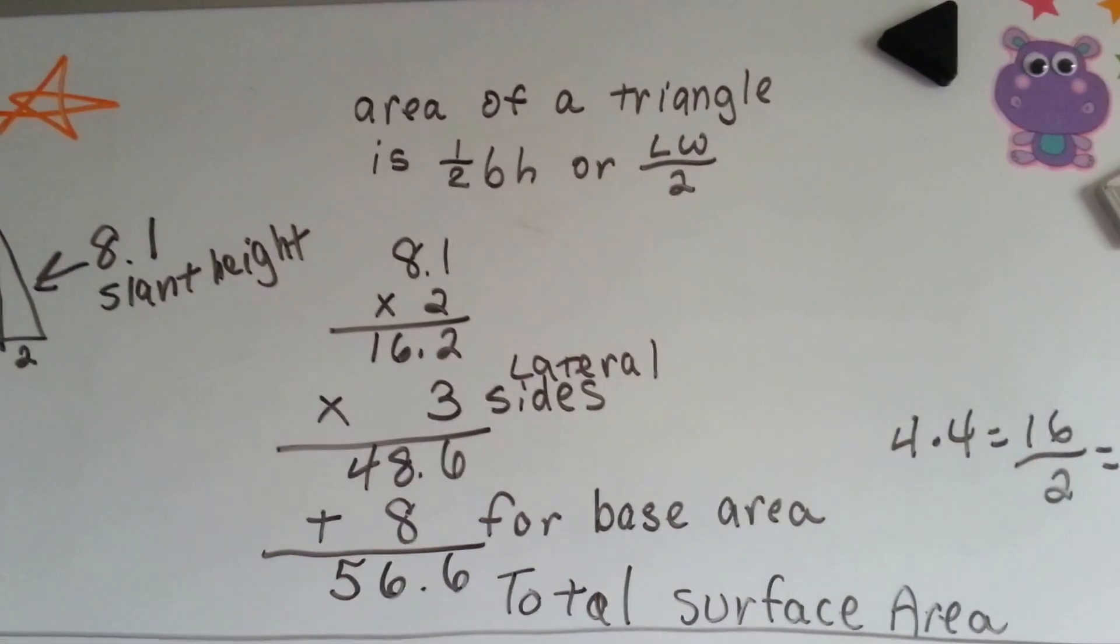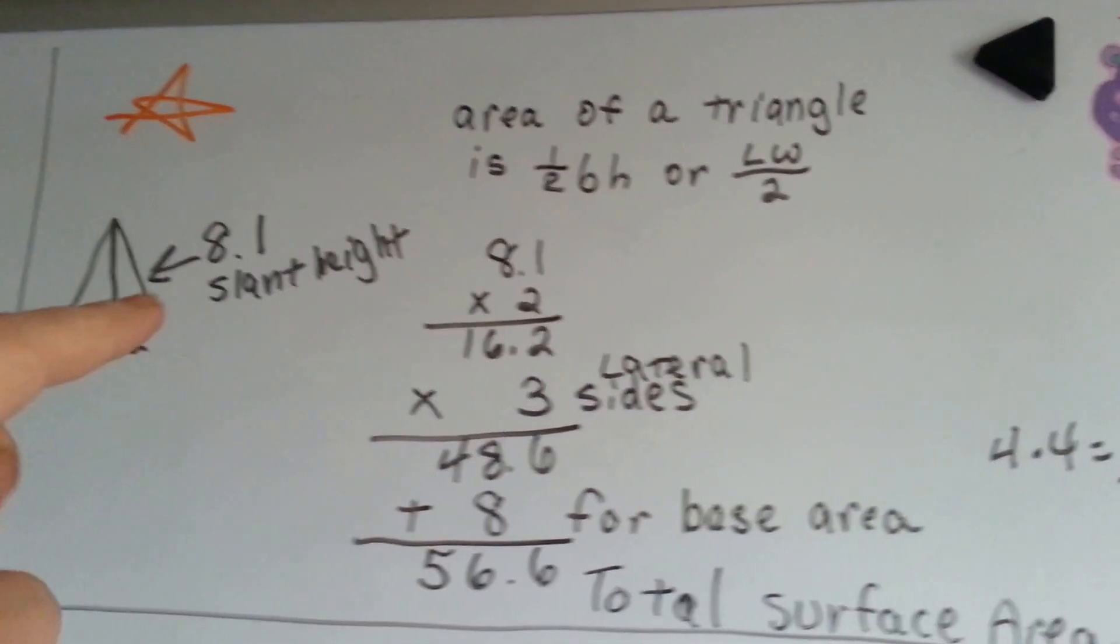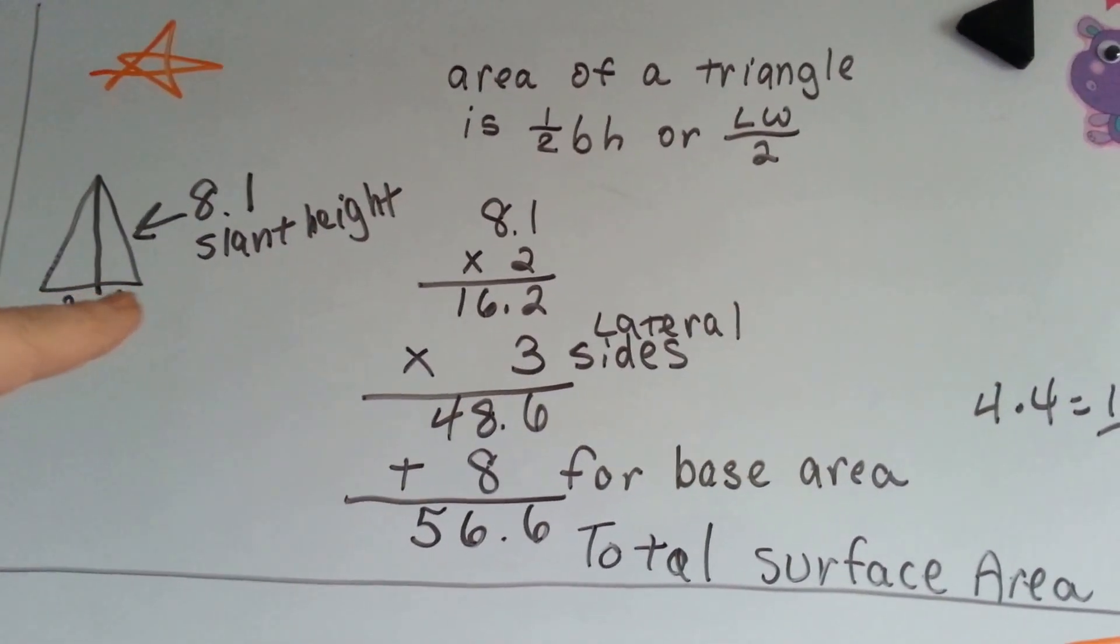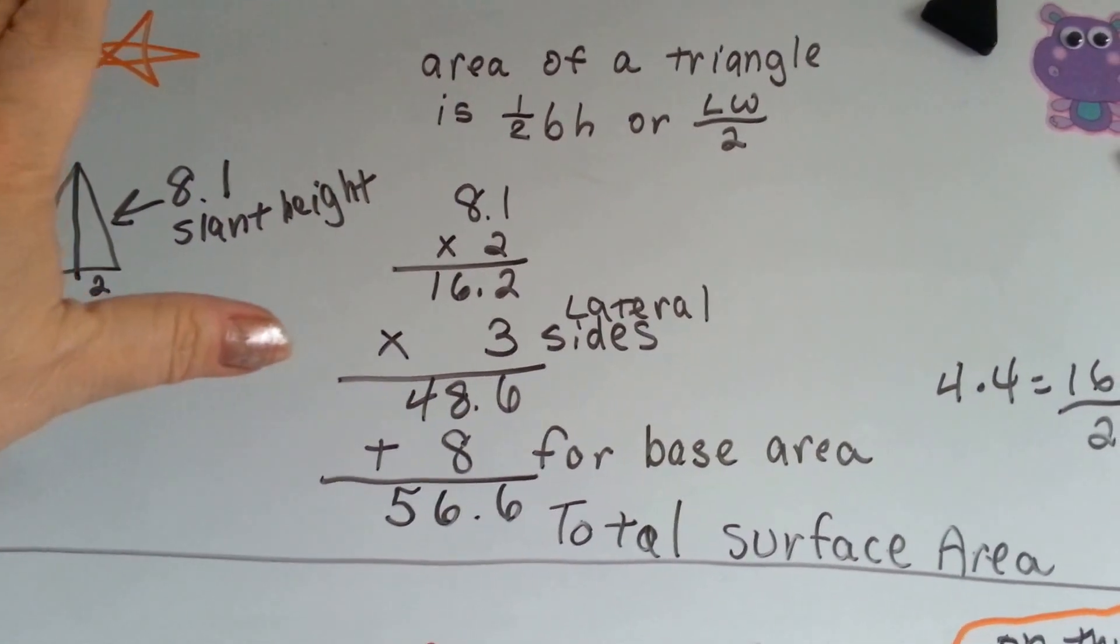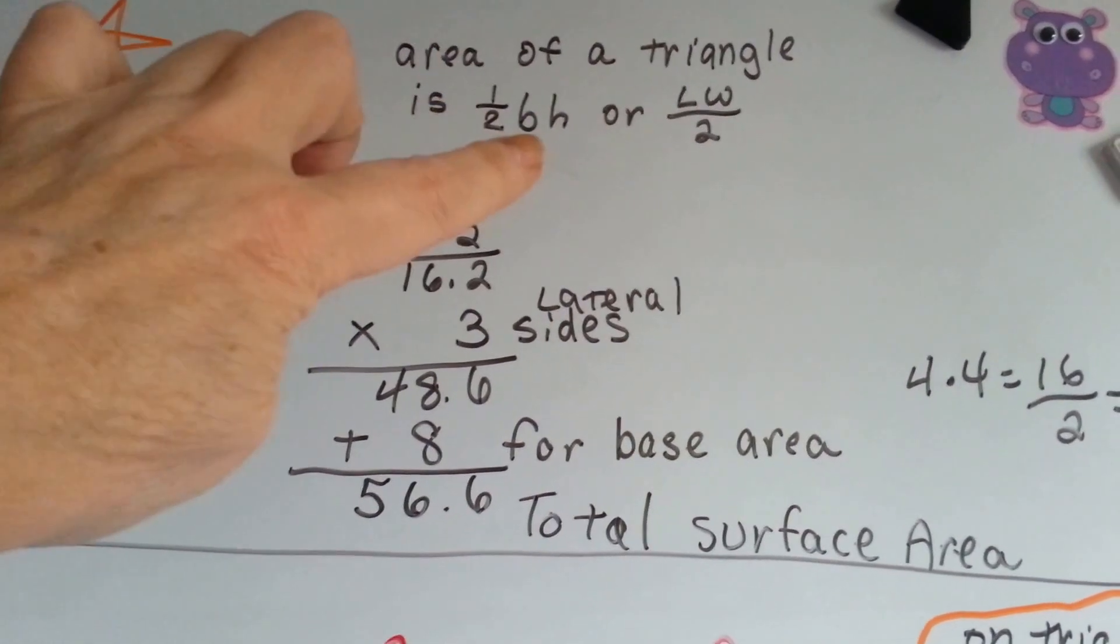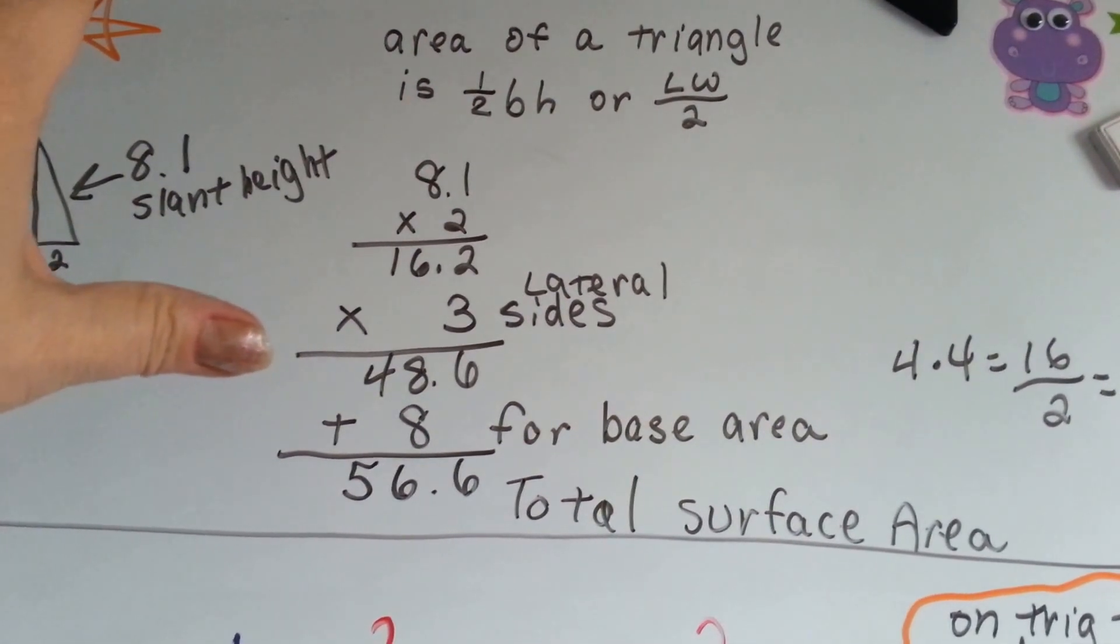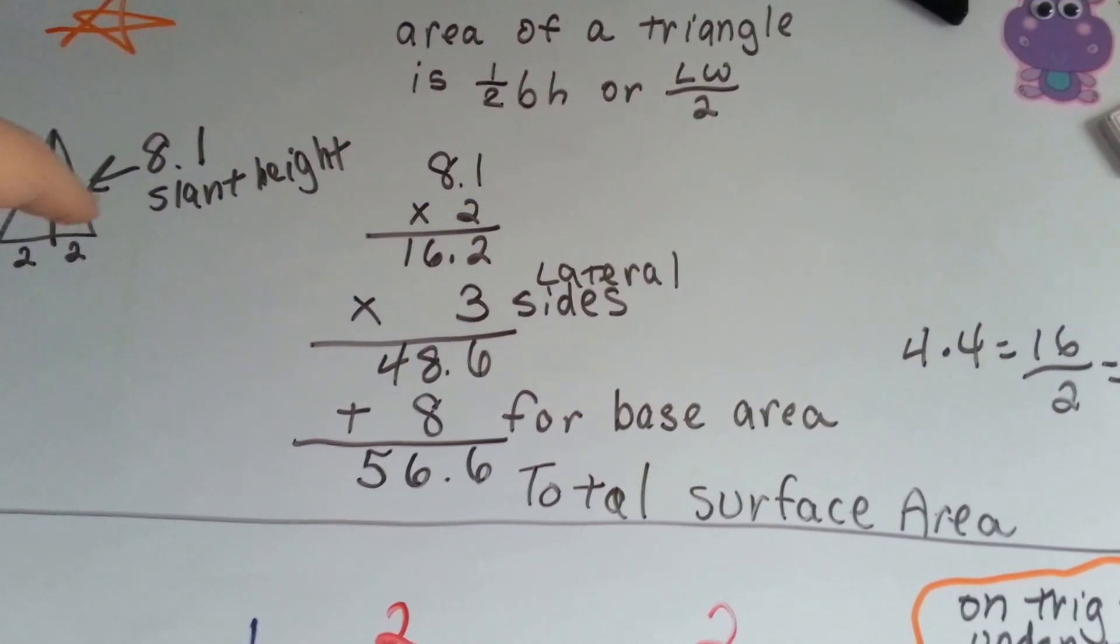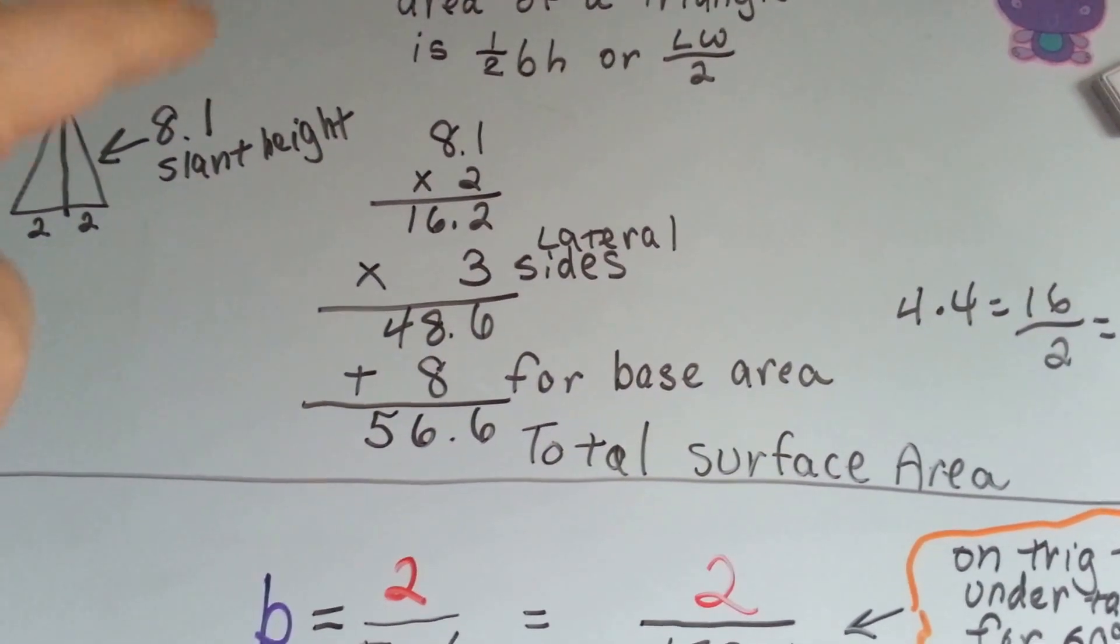So instead of doing that s equals half LP formula, we can just say look, we know the slant height is 8.1. We know this bottom part right here is a 2. If you want to find the area of a triangle, you do the length times the width divided by 2 or half base height. So 8.1 times 2 is 16.2. Now normally we would divide that in half because it's a triangle. But we don't want to. We want this whole entire big triangle.